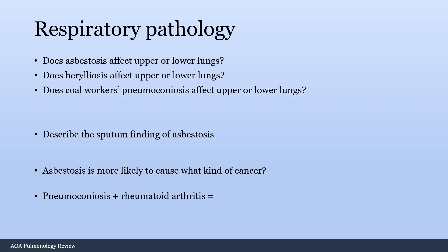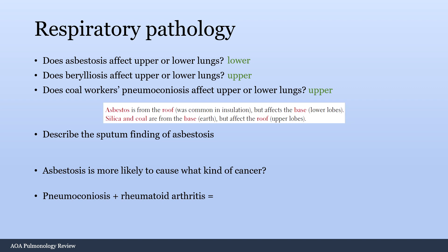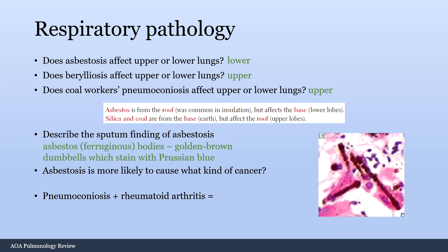Does asbestosis affect the upper or lower lungs? It affects the lower lungs. Berylliosis affects the upper lung. Coal worker's pneumoconiosis affects the upper lungs. Mnemonic: asbestos is from the roof but affects the base (lower lungs); silica and coal are from the earth but affect the roof (upper lungs). This is important because if a question tells you pathology is in the lower lungs, that's probably asbestosis. The sputum finding of asbestosis is ferruginous bodies — golden brown dumbbells that stain with Prussian blue.